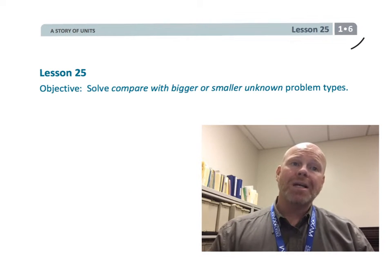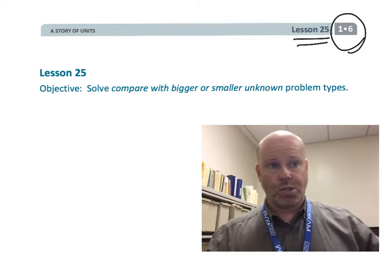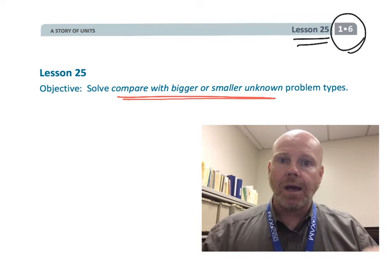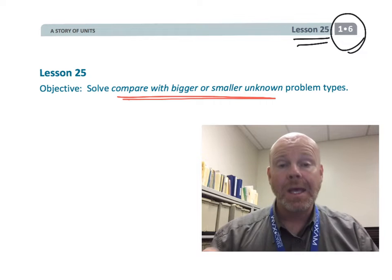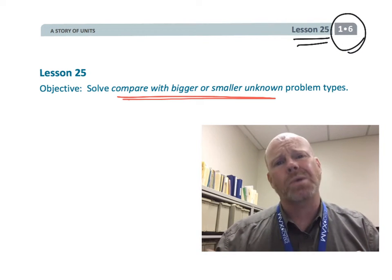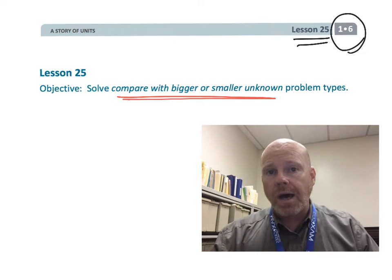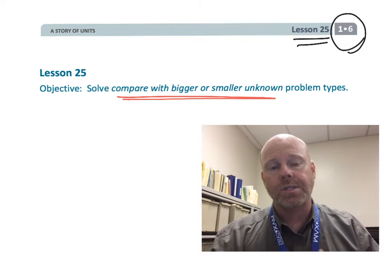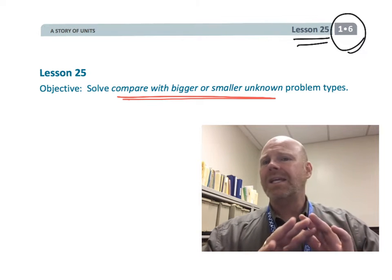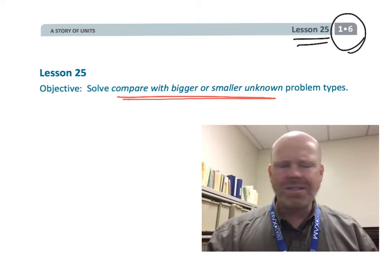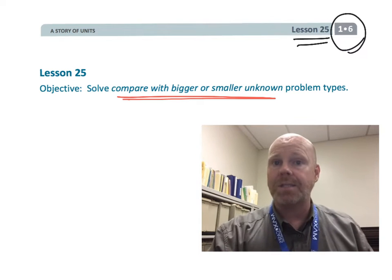All right, this is first grade, module 6, lesson 25, and this is an important one because while the objective specifically says solve and compare with bigger or smaller unknown problem types, really the key on this lesson is teaching our first graders how to draw the tape diagrams. These tape diagrams kind of come from Singapore — oftentimes we call it the Singapore bar model. In Singapore, they generally hold off until second grade before really introducing the Singapore bar model in earnest, so we are introducing it here at the end of first grade. Be easy on your kids, be easy on yourself, just have fun with this and enjoy the experience. We're not really going to expect mastery until deep into second grade. So let's get started.